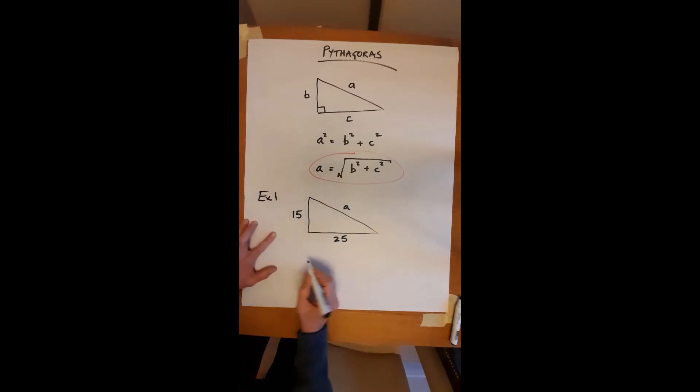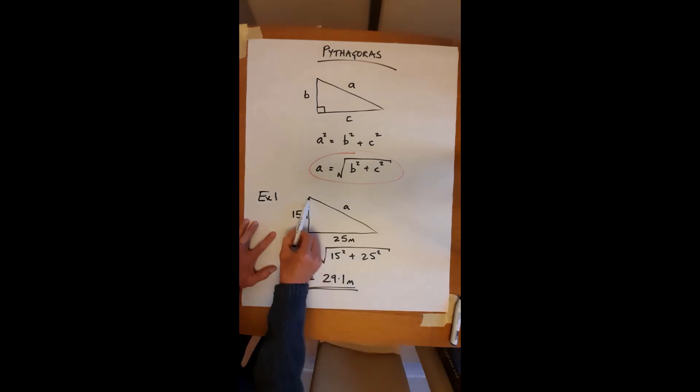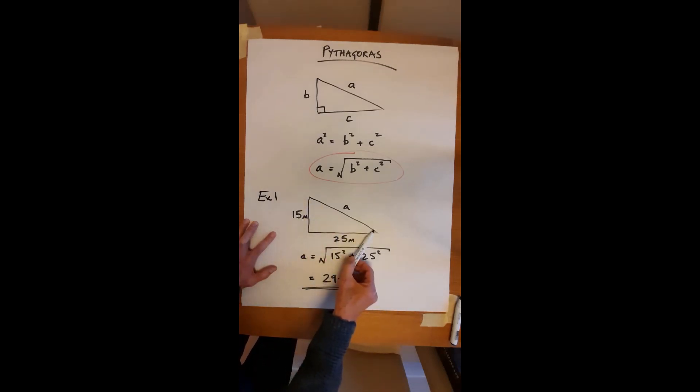So nice and simple. Take the formula. A equals the square root of 15 squared plus 25 squared. And if you put this into your calculator, hopefully you'll come out with 29.1. And usually we would have a unit, for example, this could be in meters and therefore your answer is in meters. Just a quick point: at this stage, the hypotenuse must be longer than any of the other two sides. So we've got that bit right.